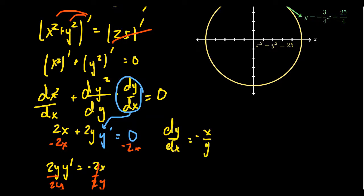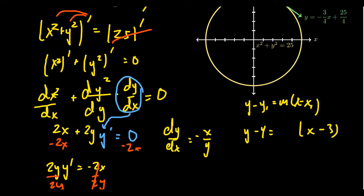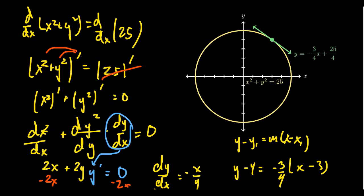We can solve for y prime: subtract 2x from both sides to get 2y times y prime equals negative 2x, then divide both sides by 2y. The 2s cancel, giving dy/dx equals negative x over y. Plugging in the point (3, 4) using the point-slope formula y minus y1 equals m times x minus x1, we get y minus 4 equals the slope times x minus 3. The slope at (3, 4) is negative 3/4, and distributing and combining like terms gives the tangent line in slope-intercept form.